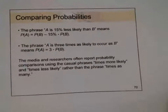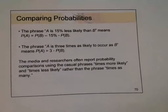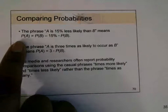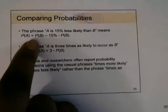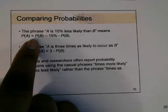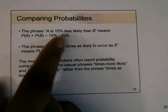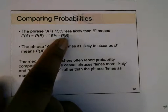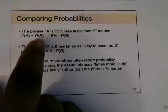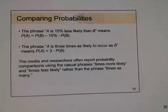Now the phrase 'A is 15% less likely than B' means this: the probability of event A — and again, 'is' is the equal sign — means we need to take 15% of whatever the probability of event B is, and subtract that product from the probability of event B.